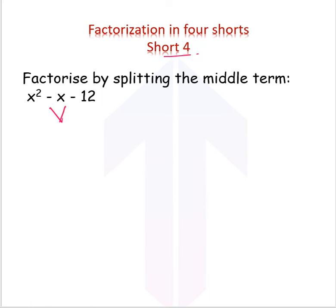We have to split the middle term into two terms so that their sum is equal to minus x and the product is equal to the product of extremes, that is minus 12x squared.